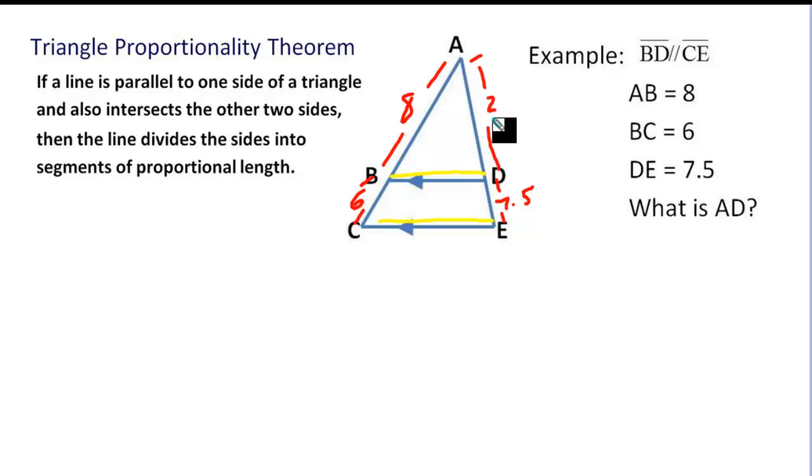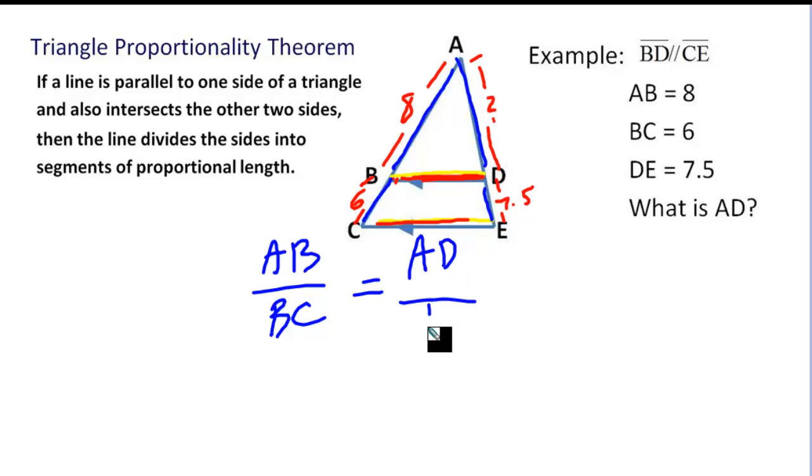We want to figure out what side AD is. We certainly have, if we look at our theorem, it says if a line, in this case BD, is parallel to one side of a triangle, which it is CE, then this line BD is chopping the other two sides of the triangle into proportional parts. We can say this segment AB divided by this segment BC has to give the same ratio as this segment on the other side AD over this segment DE.